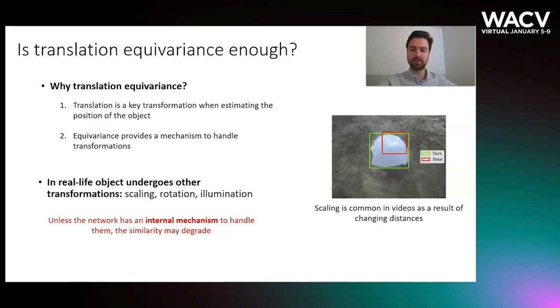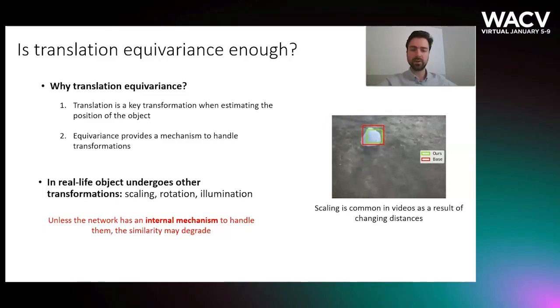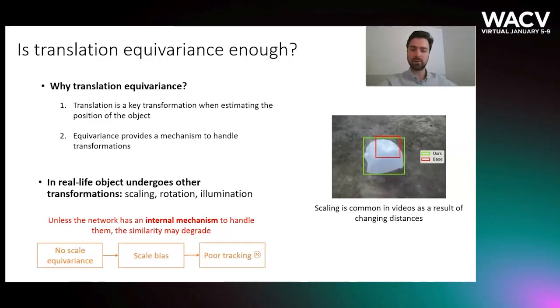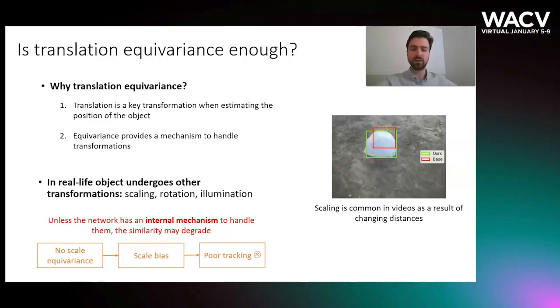In this work, we focus on scaling, and argue that analogous to translation equivariance, the lack of scale equivariance causes scale bias when estimating the similarities, and thus makes tracking challenging.